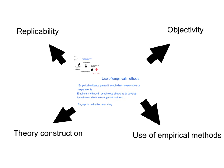Just to summarise the major features of science discussed in this video: replicability, objectivity, the use of empirical methods, and theory construction. It would be helpful to remember these when answering questions regarding the scientific method.